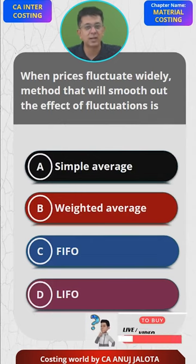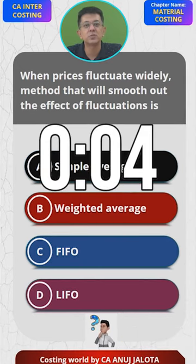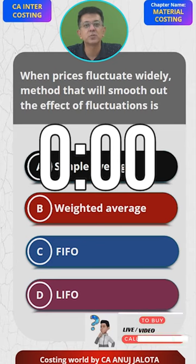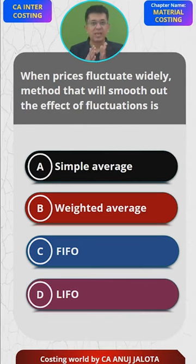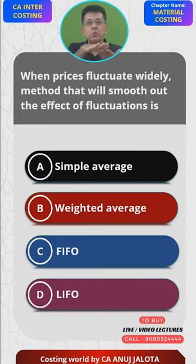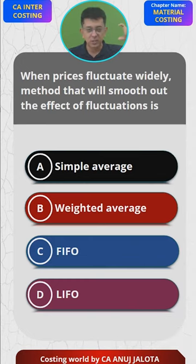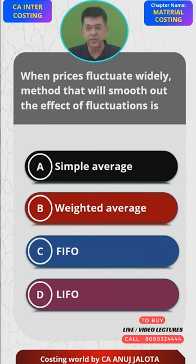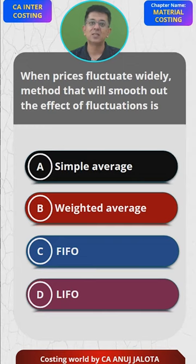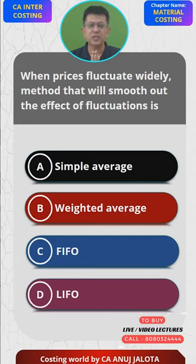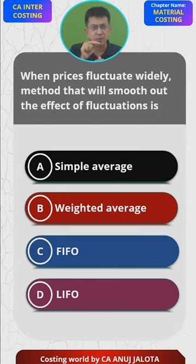Whenever anything goes up and down a lot, weighted average will try to smooth out things because it takes into account the units you have purchased and the prices you have purchased at, consolidating all of them into one single figure — that is weighted average. Under FIFO and LIFO methods, if prices are fluctuating a lot, what starts to happen is...